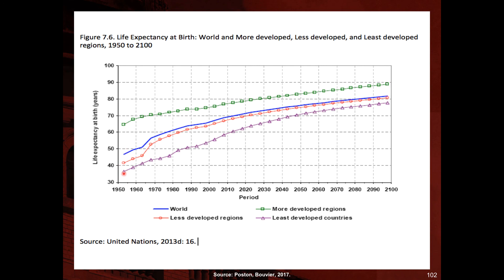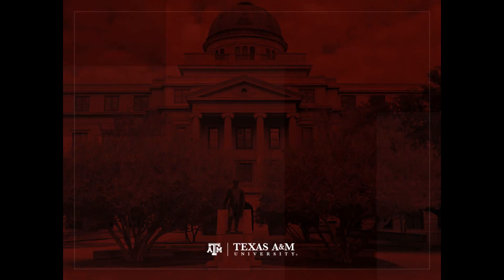Back in the 1950s, the gap in life expectancy between the most and least developed regions was about 30 years — roughly 37 years versus 65 years. By 2100, that differential is projected to narrow to only about 12 years. This concludes the topic on causes of death around the world.